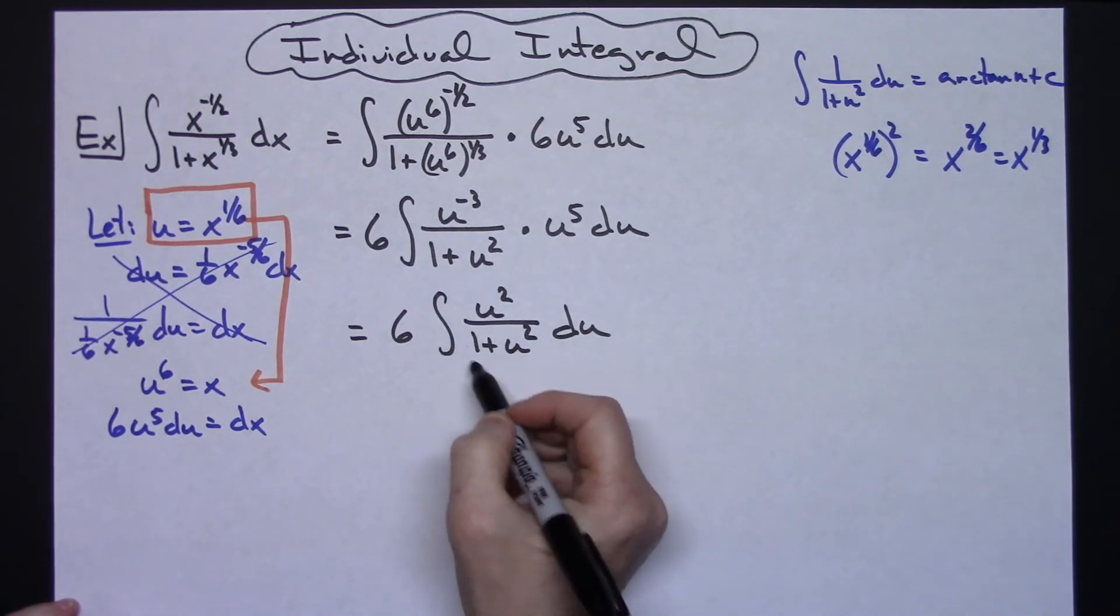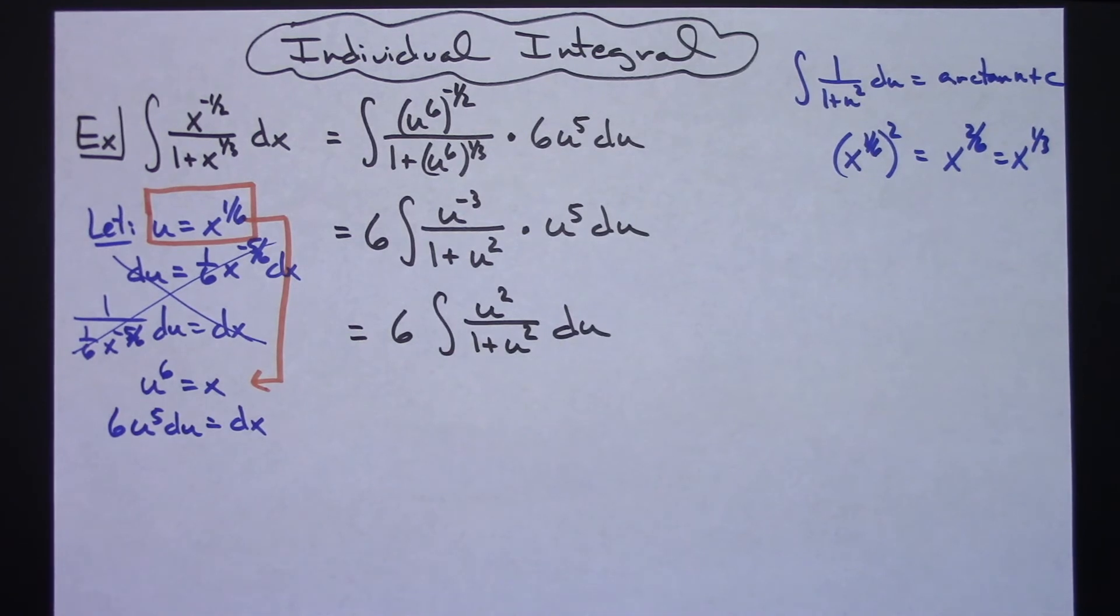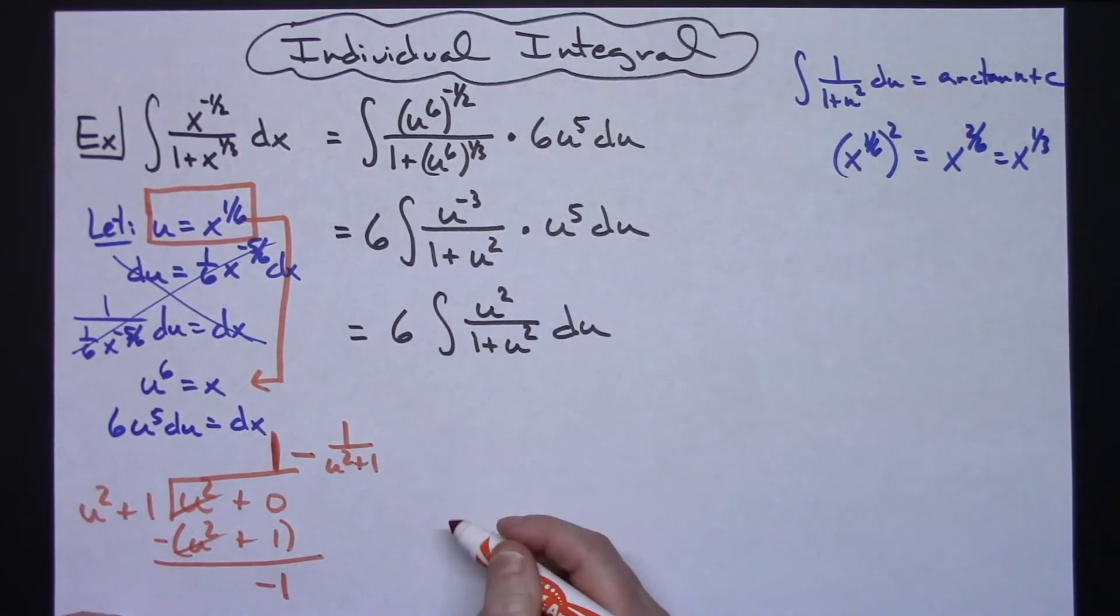However, the easiest way now to handle this would be to do a long division on that rational expression there. So if I put my u squared on the inside, let's go ahead and add a plus 0 for placeholder there. And then putting the u squared plus 1 on the outside. u squared into u squared goes one time. One times that will be u squared plus 1. Subtracting there will lose that. 0 minus 1 there is going to give me a minus 1. So 1 minus 1 over u squared plus 1.